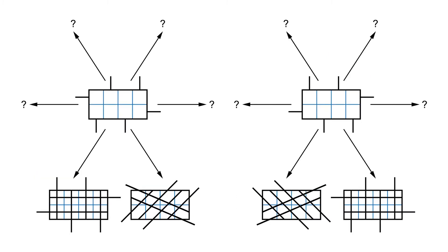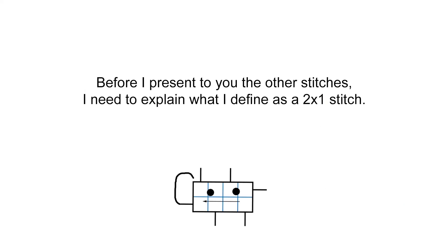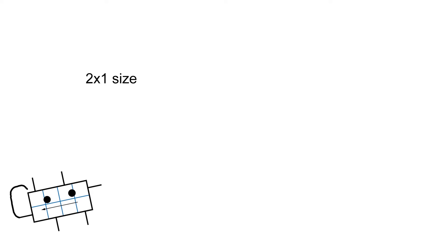There are 6 for each handed orientation. 6 for the left hand, and 6 for the right. Now, before I present you the other stitches, I need to explain what to define as a 2x1 stitch, why its size is called 2x1,